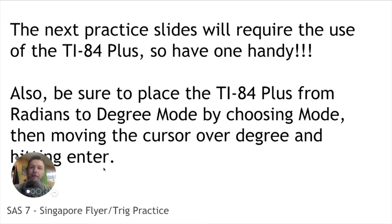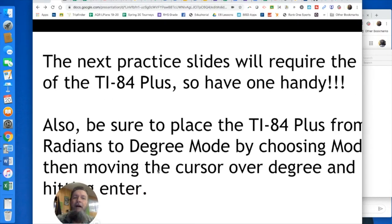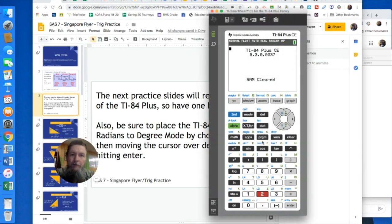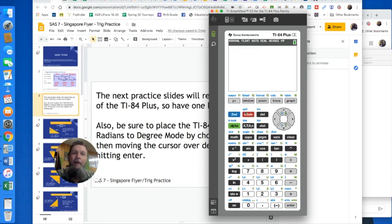The next practice requires our TI-84. I'm going to make sure we put the TI-84 Plus in degree mode by choosing mode and moving the cursor over to degree. If we go into mode, we need to change from radians to degrees — move the cursor down to radians, over to degrees, hit enter, and then hit second quit to go back. We just want to make sure we're set up correctly before we get started.